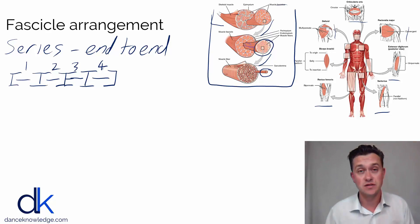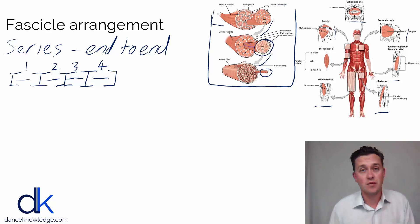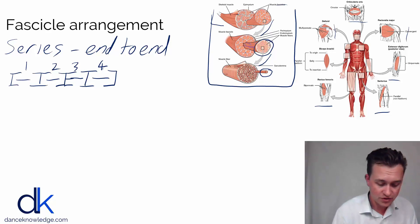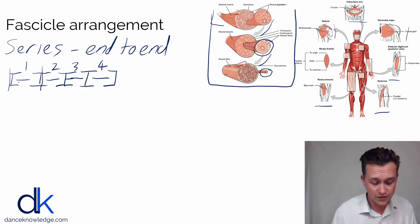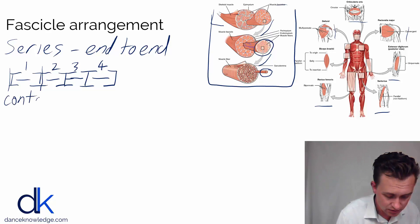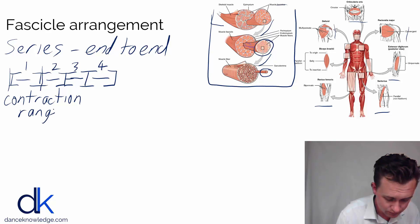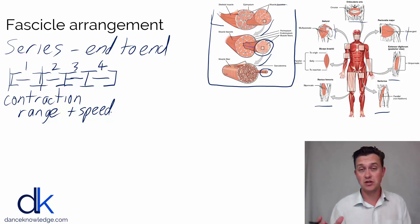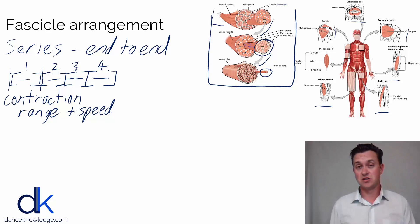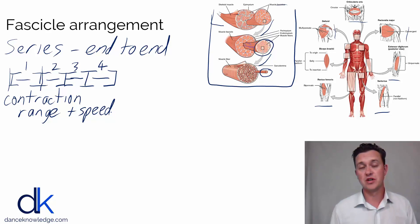What is the advantage of having these sarcomeres in series? First of all, it gives the muscle length, and that's important because we need muscles to have a certain amount of length in order to attach between the bones. But functionally and mechanically there are advantages as well. Each sarcomere has a fixed contraction range and speed — it can only shorten as far as the actin can be pulled together by the myosin, and the myosin can only use energy at a certain rate, creating that shortening at a certain speed.